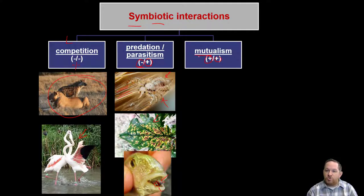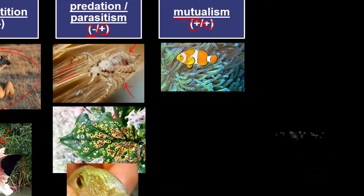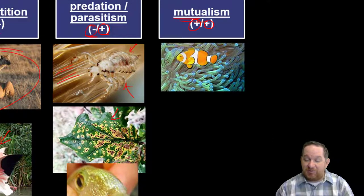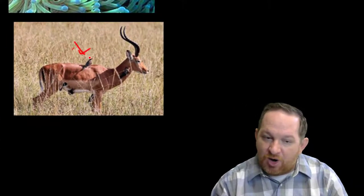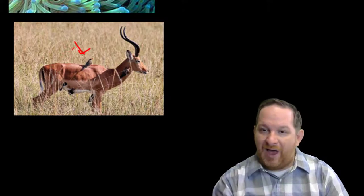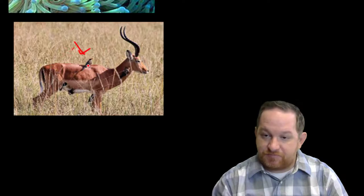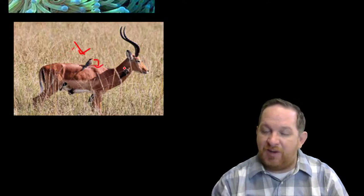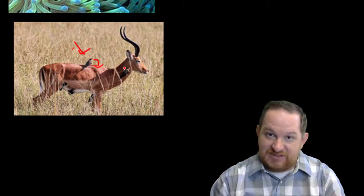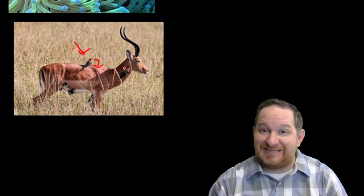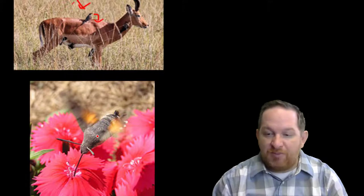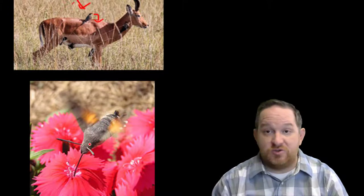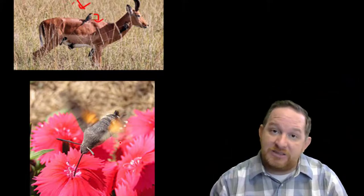Mutualism is beneficial for everyone — mutualistically beneficial. A prime example is the clownfish and the sea anemone: the clownfish has a place to hide and the sea anemone gets leftover resources from the fish. The oxpecker bird sitting on an impala is another example — the oxpecker eats ticks off the impala, benefiting the bird with food and benefiting the impala by removing its ticks. The hummingbird on dianthus is also mutualistic: the hummingbird gets its nectar and in return helps pollinate the flower.